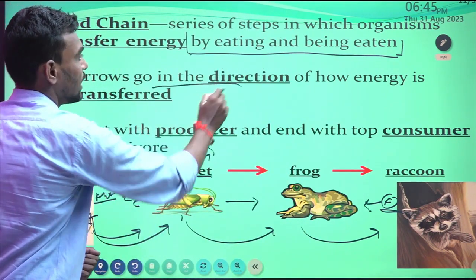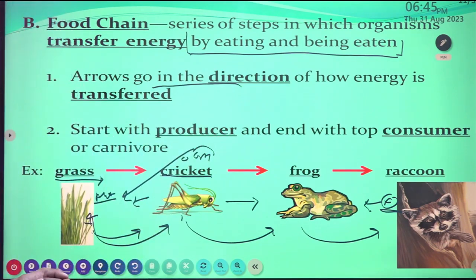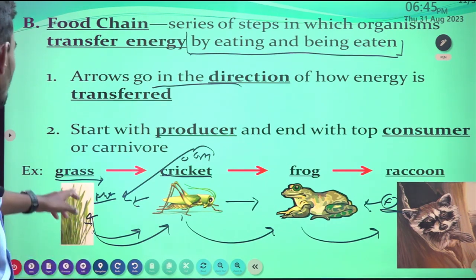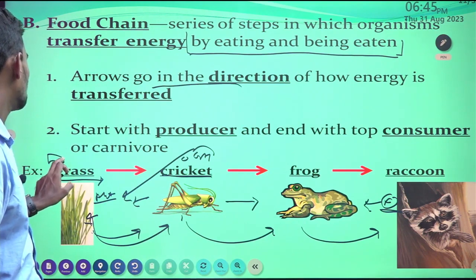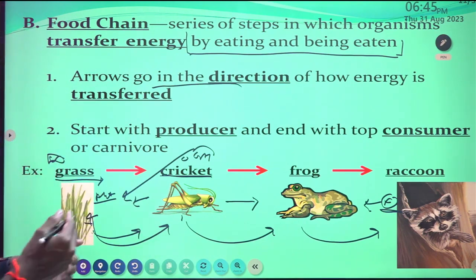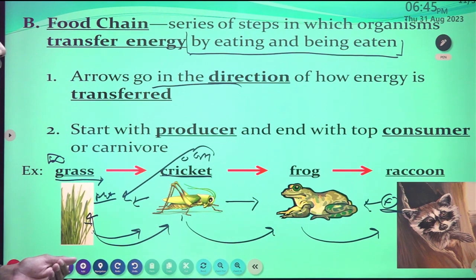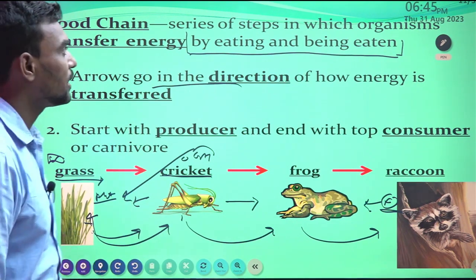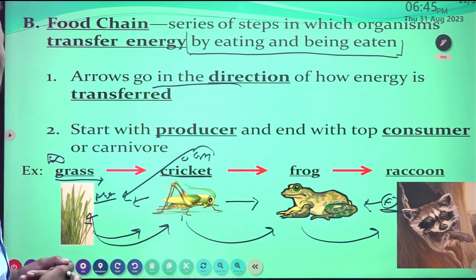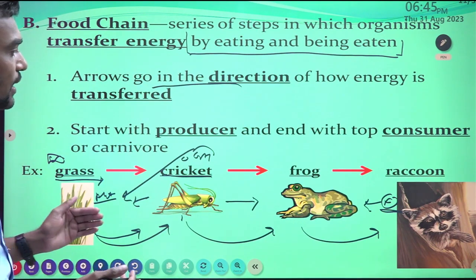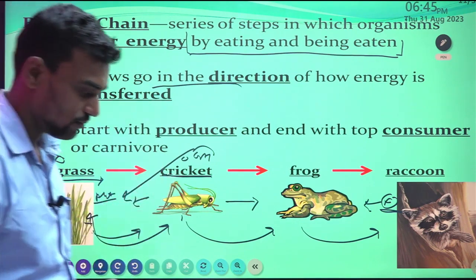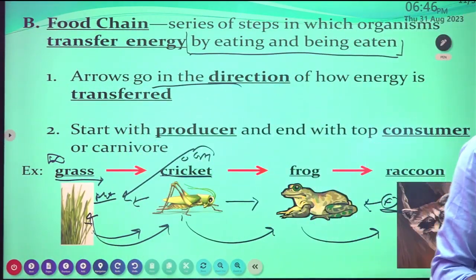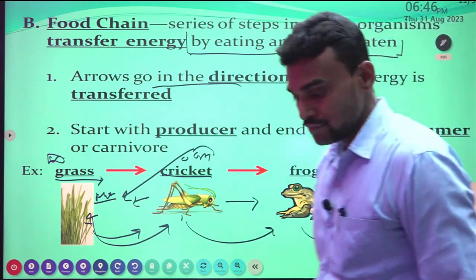The direction of energy flow is shown by transport arrows — starting with the producer and ending with the consumers or carnivores. This is the best example of the ecosystem transferring energy by eating and being eaten.